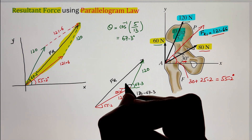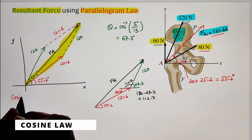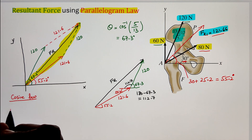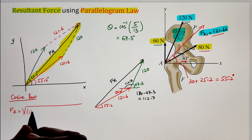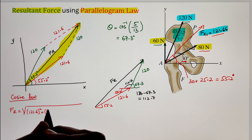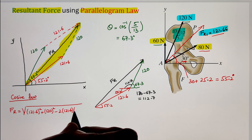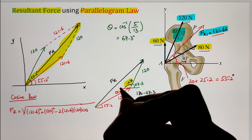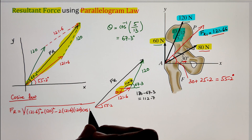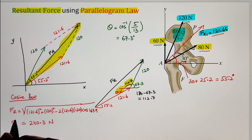Once we have the angle between the two forces of 121.6 and 120 Newton, we apply our cosine law to find the resultant force Fr. Fr equals the square root of 121.6 squared plus 120 squared minus two times the product of the two forces times the cosine of the angle between them. The angle is the sum of 112.7 and 55.2, giving 167.9 degrees. Simplifying, we get Fr equals 240.3 Newton, which is the resultant of the three forces acting on the pelvic bone.